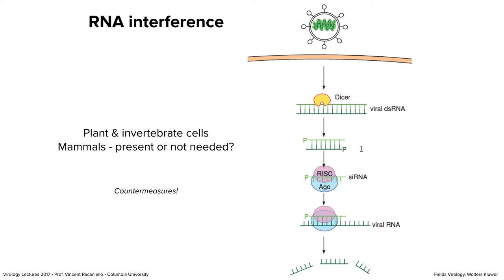DICER chops up the RNA into roughly 21-nucleotide pieces. The single strands of those pieces are called siRNAs — small interfering RNAs. They will defend against infection by the same virus. They combine in a RISC complex, which includes an enzyme called argonaute, and that chops up the viral RNA. The siRNA acts as a guide, directing the RISC complex to the viral RNA, which is then degraded. This is very important in plants and insects, though evidence in certain mammalian cells remains unclear.